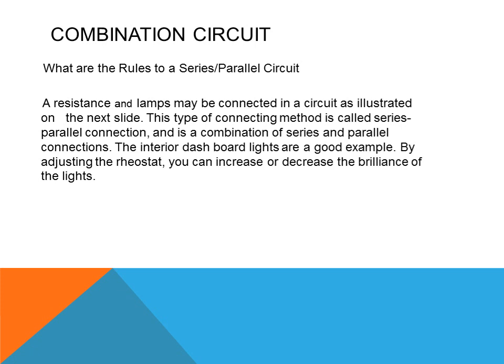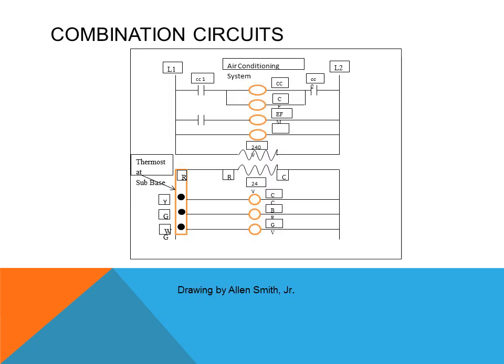By adjusting the rheostat — which is a variable resistor, sometimes called a dimmer switch — you can increase or decrease the brilliance of the lights. Looking at the diagram, we see a rheostat or variable resistor in series with the load. By increasing the resistance of that rheostat, the lights will go dimmer. By decreasing the resistance of that rheostat, the light bulbs will glow brighter in the parallel circuit. So in other words, the rheostat is in series with the lights, and the lights are in parallel with each other.